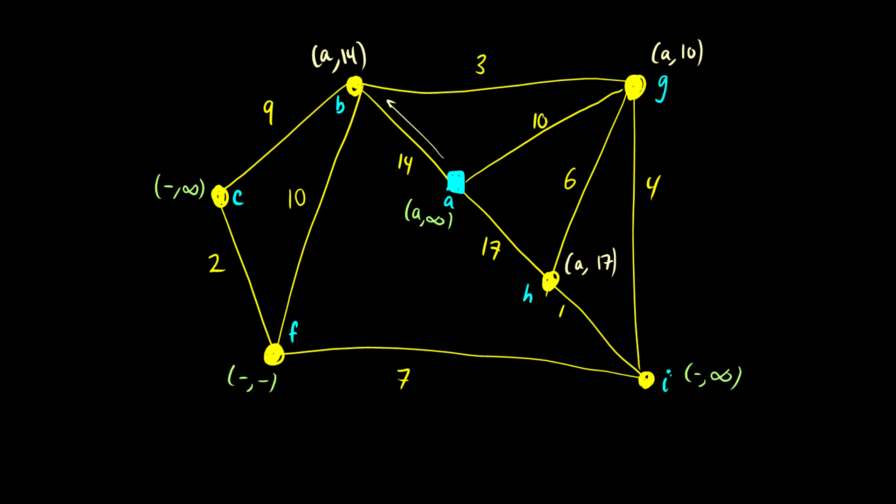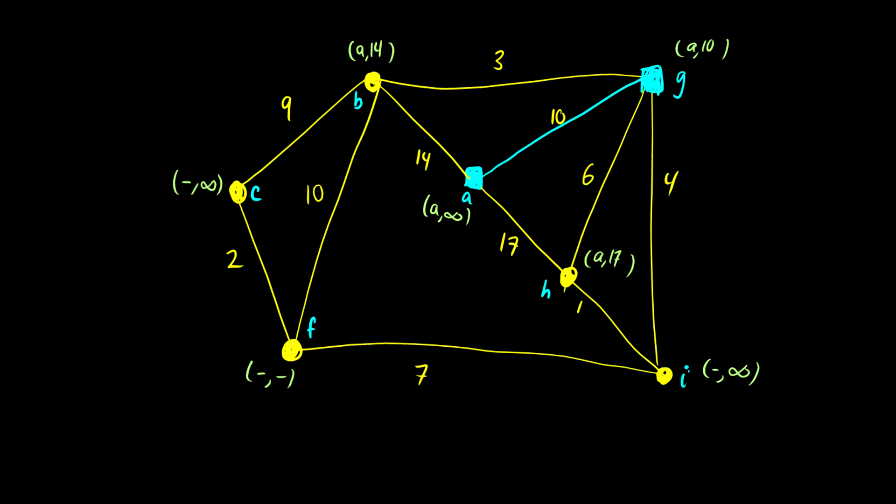And now what we do is we say, which one is the shortest distance? 14, 10, or 17? Well, 10 is clearly the shortest. So what we do is we say, now we're going to solidify G and say, now A is going to G at a distance of 10. And that is definitely going to be in our tree. So we can fill in this path here. And we say, that's good. So the next slide here solidified that.